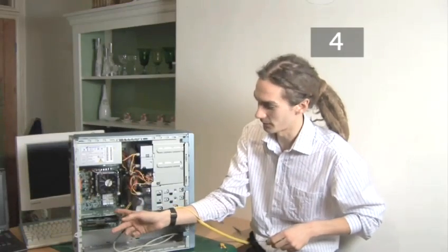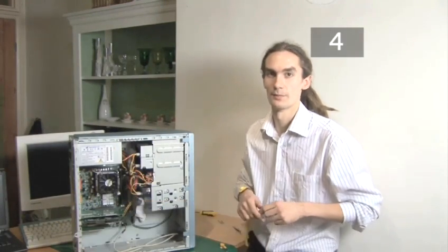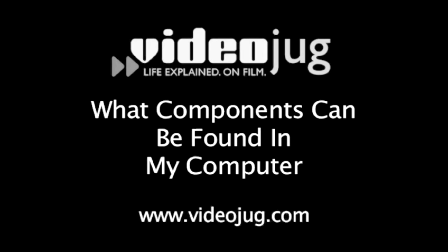The graphics card is found at the back of the computer. It plugs into an AGP slot on the motherboard. For more information on the motherboard please watch the Videojug film What components can be found in my computer?